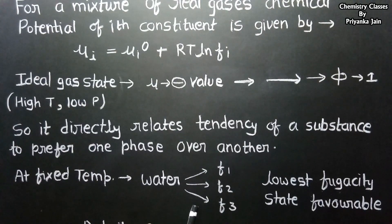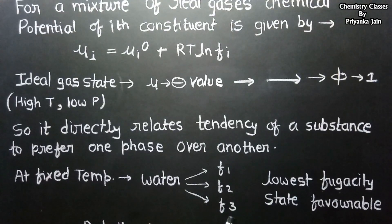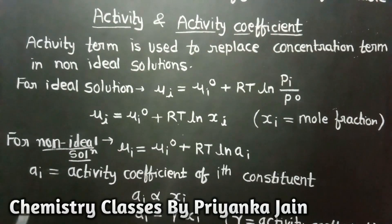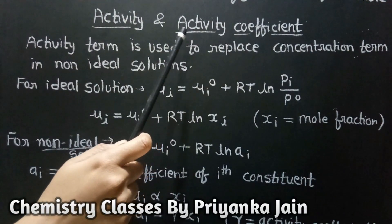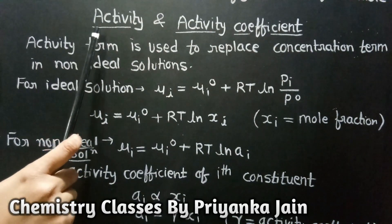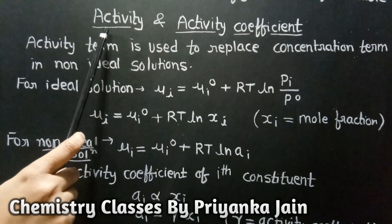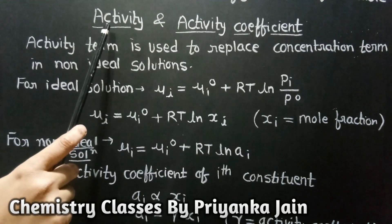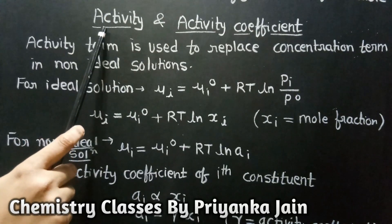The phase which has the lowest fugacity will be the favorable phase. So by fugacity we can easily determine which phase is preferred. Now we see another term: activity and the activity coefficient. Activity is similar to fugacity — just as fugacity is used in the case of gases to replace the pressure term, activity is used to replace the concentration term in the case of non-ideal solutions.